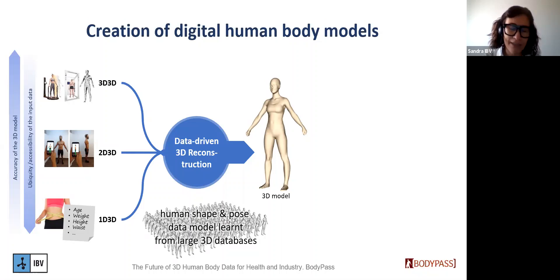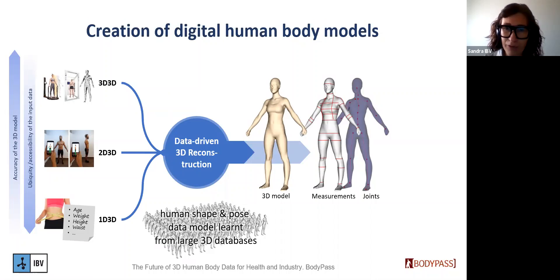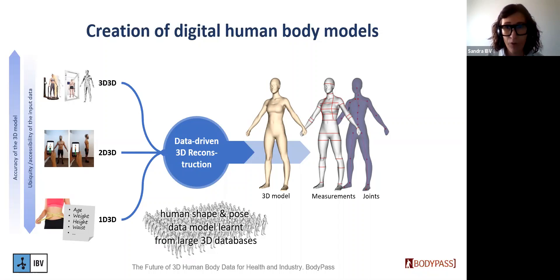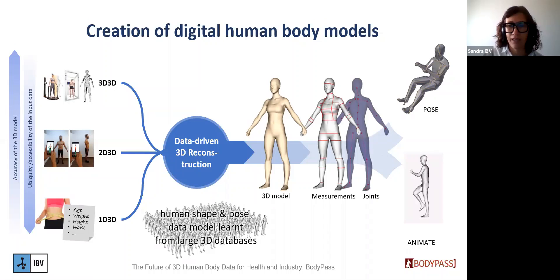What we are obtaining from these tools is a 3D model of the person. To do this, we are using a data-driven reconstruction tool that learned from big databases created in past research projects. From this 3D model, we can extract different metrics, like body measurements used in ready-to-wear clothes, or an internal skeleton to move or animate the avatar. We can change the pose — for example, to a sitting posture — and animate it for use in a simulation environment.